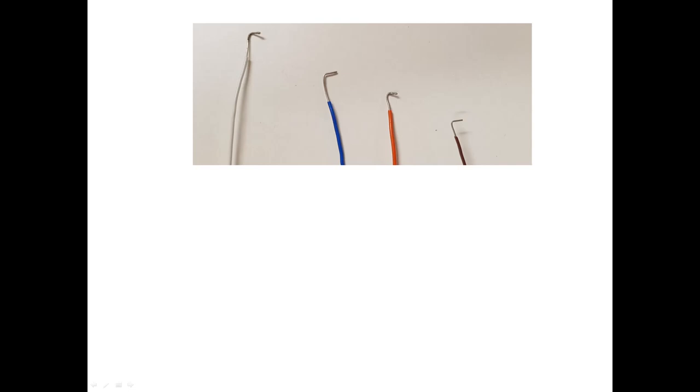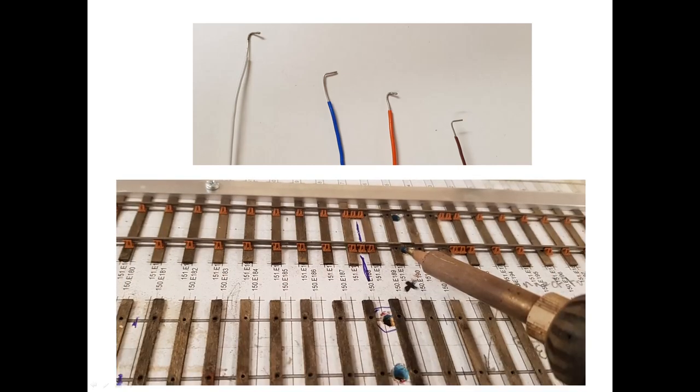I use single strand wire for my droppers. Its lack of flexibility makes it ideal for the purpose because it can be bent as necessary. When installed, it won't be under any stress. I have a range of colours to make tracing under the baseboards as easy as possible. After stripping the insulation off each end, I use a pair of pliers to bend 3 or 4mm to 90 degrees at one end and tin this section. The dropper wires can then be fed through the holes in the baseboard and oriented so that the bent section is parallel to the rail and soldered to it.